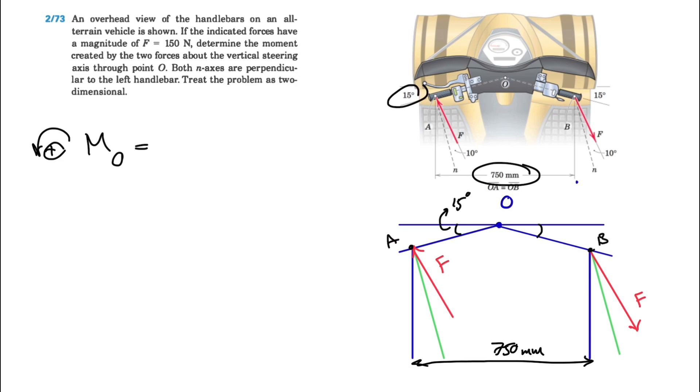In order to find the moment about O, the fastest way is using the green line which is the N-axis that we have in the question, which is perpendicular to the left handlebar.